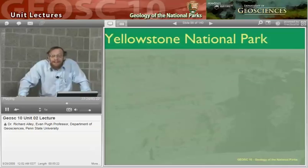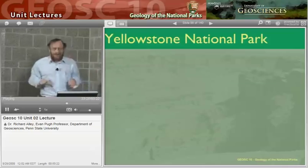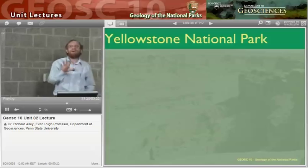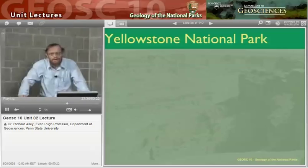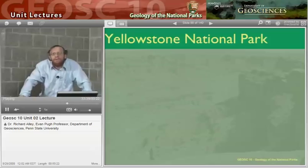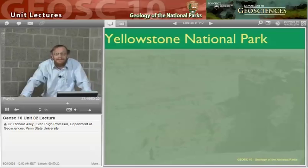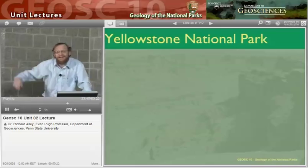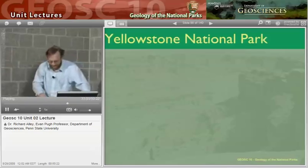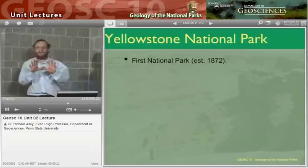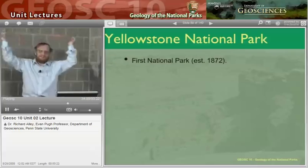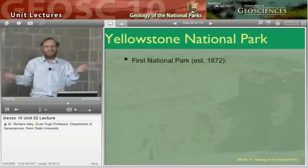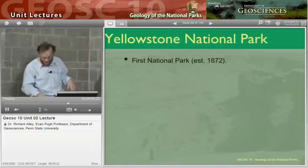We're going to briefly visit another park and look at one of the implications of this. Why should you care? One reason is that occasionally things that are moving get stuck and then move again — and when they move, they go fast. If you're standing on top, your feet get knocked out from under you, and if you're a building, you fall down. So we're going to go to Yellowstone, which has geysers, bears, beautiful trees and lakes, earthquakes, volcanoes, and river erosion. Yellowstone has everything. It's the first national park.